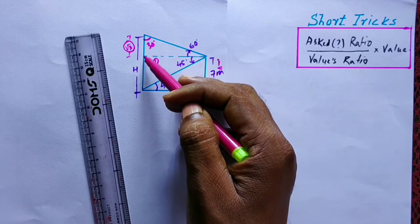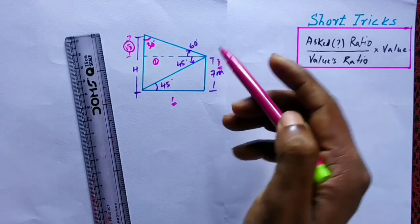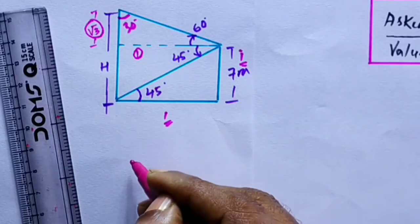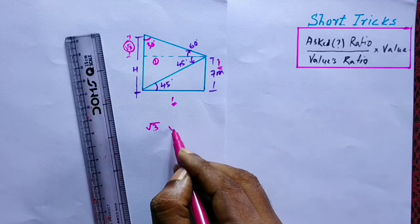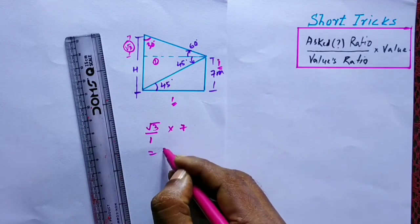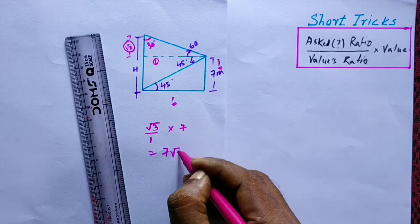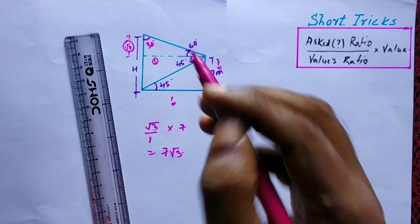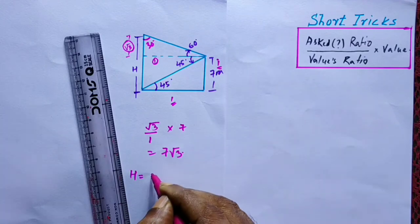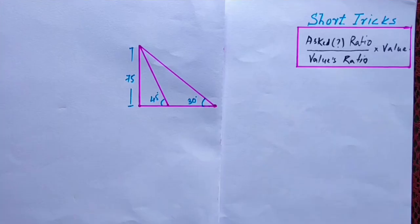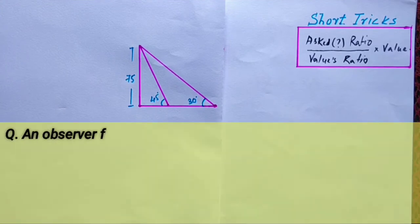The small triangle: ax ratio = √3, value = 7, values ratio = 1, so this part equals 7√3. From here to here it is 7√3, and from here to here it is 7. So height h = 7(1 + √3) meters is our answer.